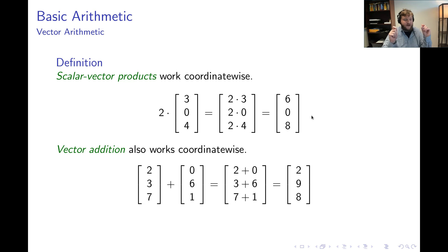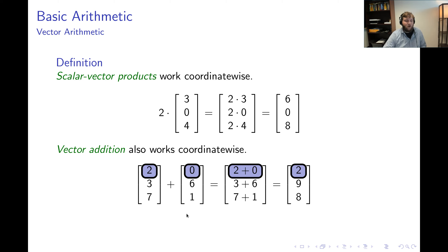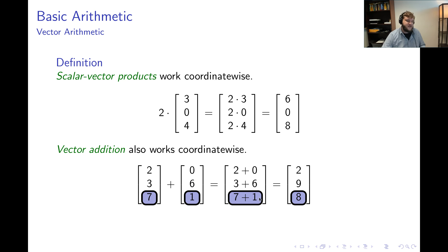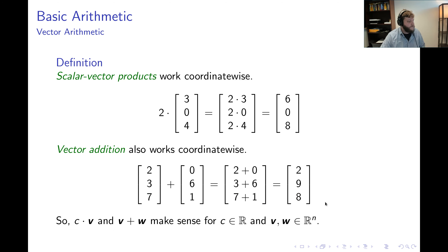We also have vector addition. If two vectors have the same number of coordinates, we add them by matching coordinate positions and adding. For two vectors in ℝ³: first coordinates 2 + 0 = 2, second coordinates 3 + 6 = 9, third coordinates 7 + 1 = 8. The result is a new vector also in ℝ³. So scalar times vector (c·v) and vector addition (v + w) make sense when c is a scalar and both vectors have the same number of coordinates.